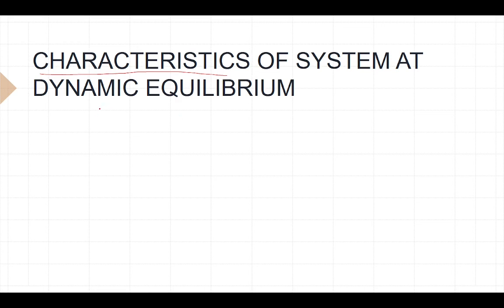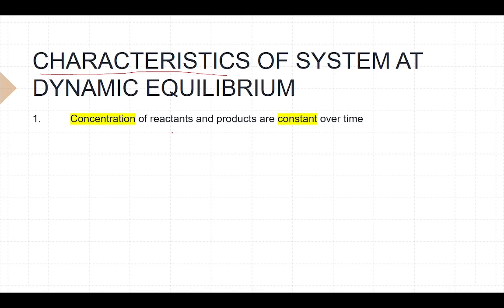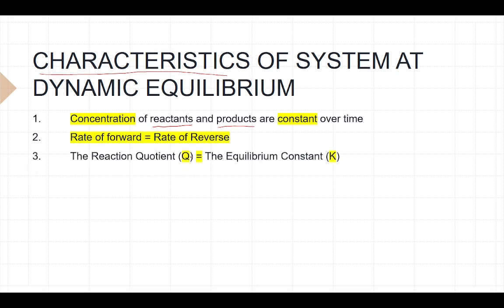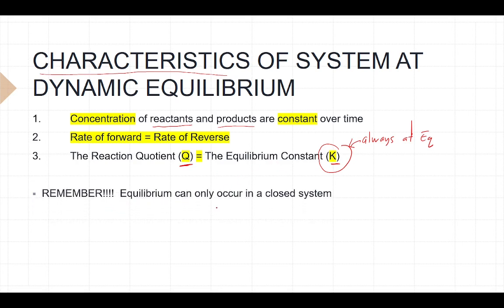The word 'dynamic' means something is moving — something is happening; it is not static. Even though the system is dynamic, the concentration of reactants and products remain constant over time. The rate of forward reaction equals the rate of reverse reaction, and the reaction quotient Q equals the equilibrium constant K. Remember, equilibrium can only occur in a closed system, because in an open system reactants can escape to the surroundings.